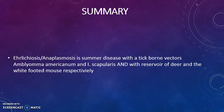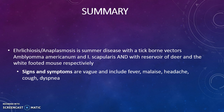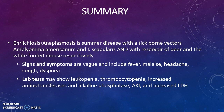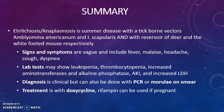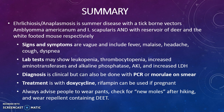Summary: Ehrlichiosis and anaplasmosis are summer diseases with tick-borne vectors — Amblyomma americanum and Ixodes scapularis — and reservoirs of deer and the white-footed mouse, respectively. Signs and symptoms are vague and include fever, malaise, headache, cough, and dyspnea. Lab tests may show leukopenia, thrombocytopenia, increased aminotransferases and alkaline phosphatase, acute kidney injury, and increased LDH. Diagnosis is clinical; it can also be confirmed with PCR or Morula on smear. Treatment is with doxycycline; rifampin can be used if pregnant. Always advise people to wear pants, check for new ticks after hiking, and wear repellent containing DEET.